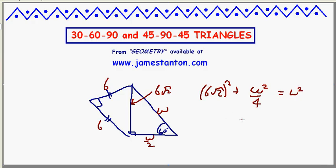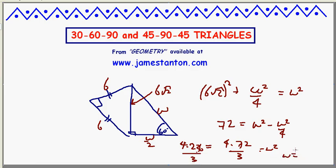36 times 2. 72 is w squared minus w squared over 4. 4 times 72 over 3 is w squared. w squared is the square root of that, which is 4 times... 8 times 36. Sorry. 4 times 2 times 36 over 3. So w is actually the square root of... 6 times 2 is 12. Root 2 over root 3, which is what I had before.